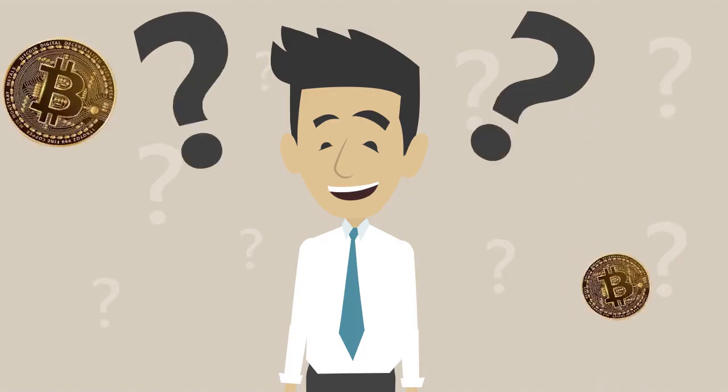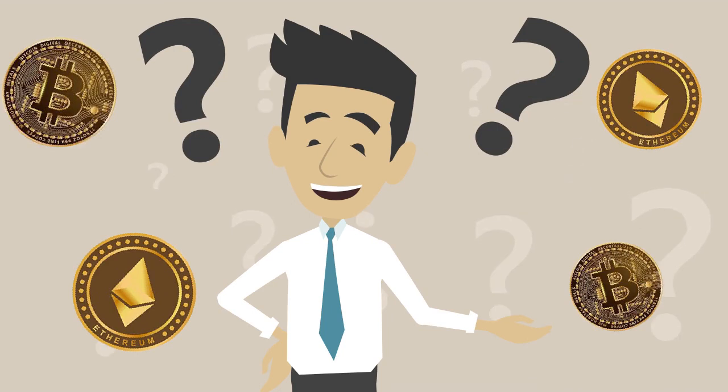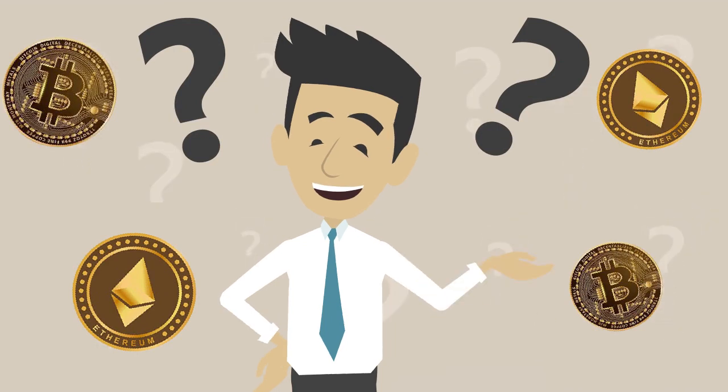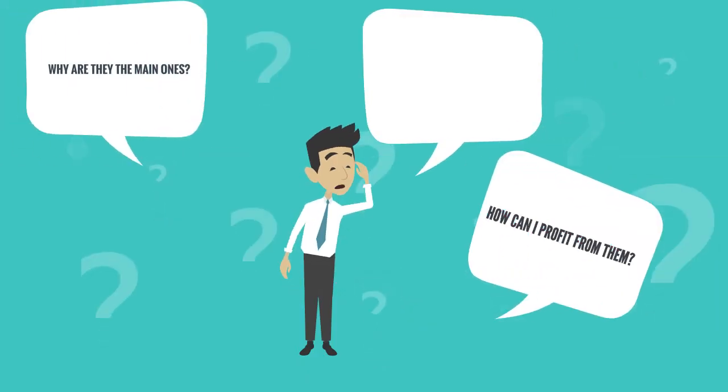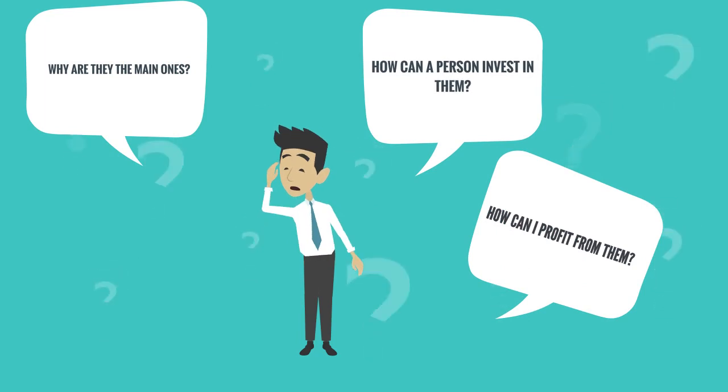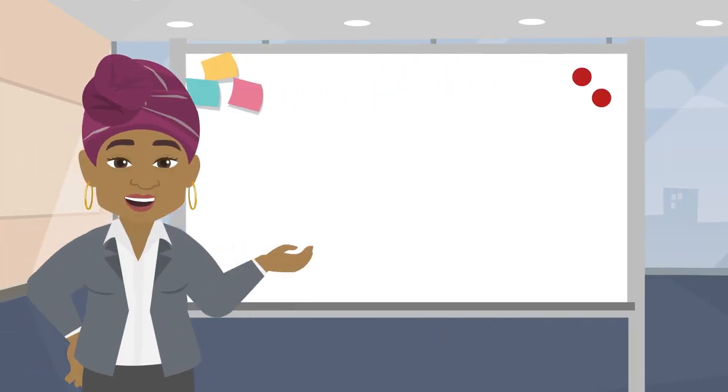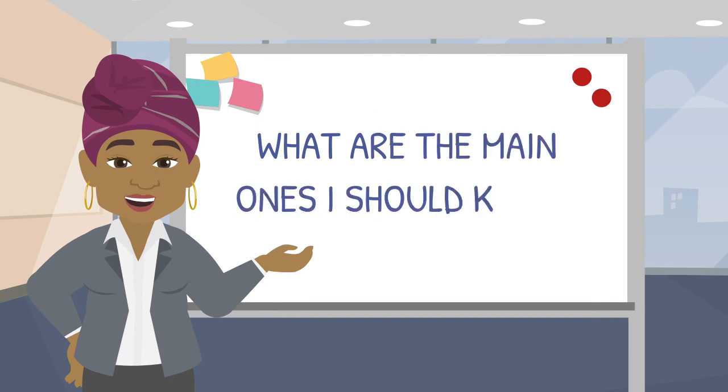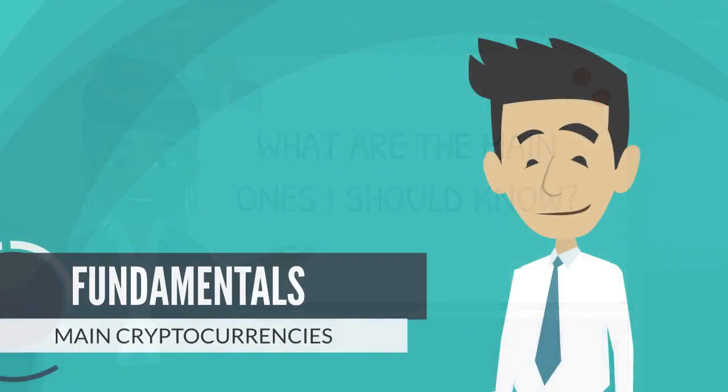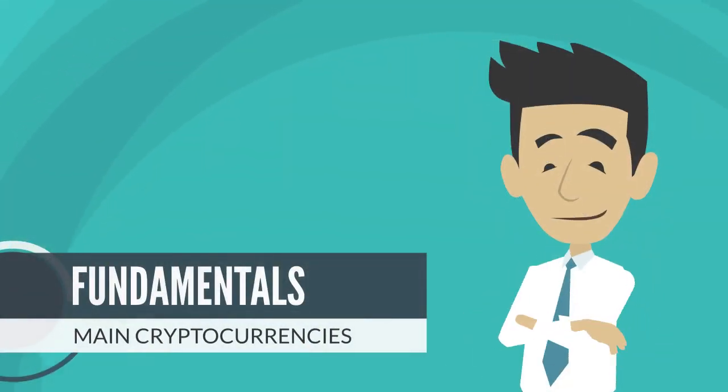All these choices create a lot of noise in trying to understand what are the main cryptos, why are they the main ones, and how can a person invest and profit from them. If someone would just focus on explaining the main ones instead of going deep in the rabbit hole with all these new coins, that would help me understand the fundamentals of the main cryptocurrencies.